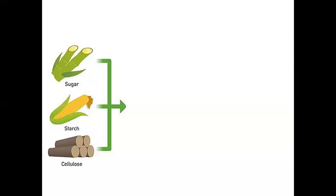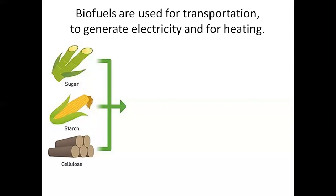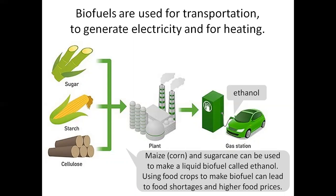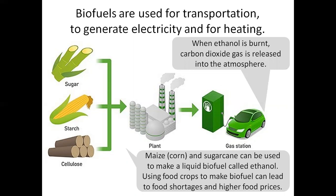Biofuels contain sugar, starch, and cellulose. Biofuels are used for transportation, to generate electricity, and for heating. Maize, corn, and sugar cane can be used to make a liquid biofuel called ethanol. However, using food crops to make biofuel can lead to food shortages and higher food prices. When ethanol is burned, carbon dioxide gas is released into the atmosphere.